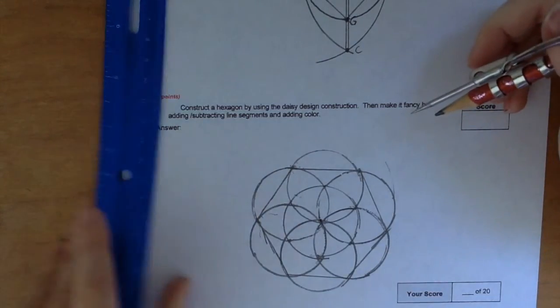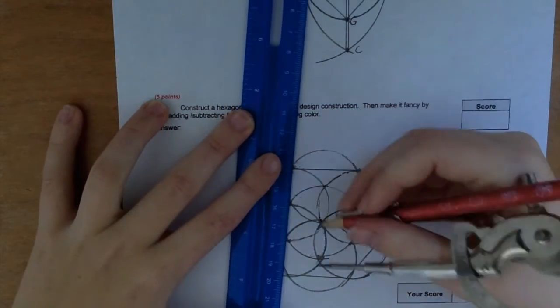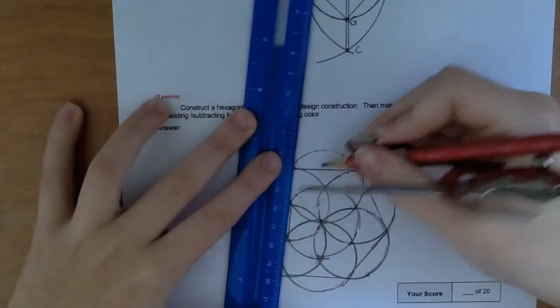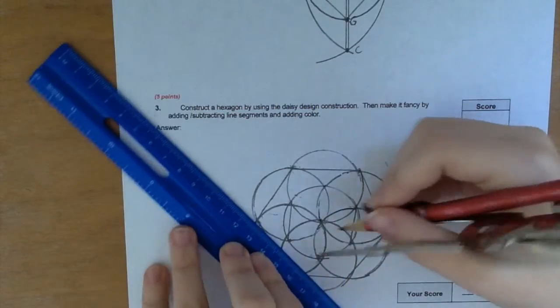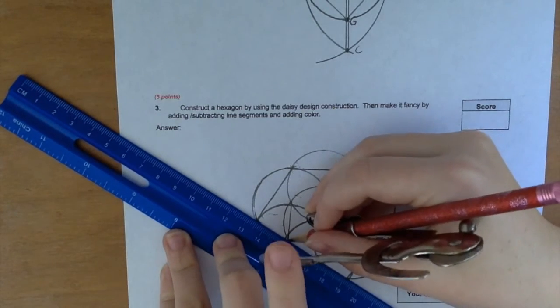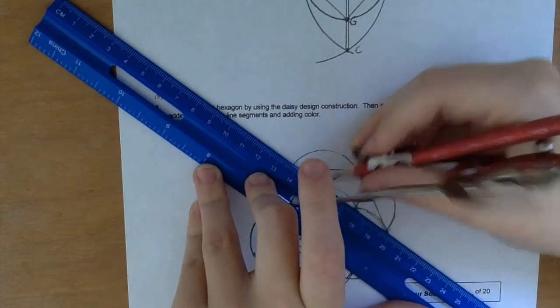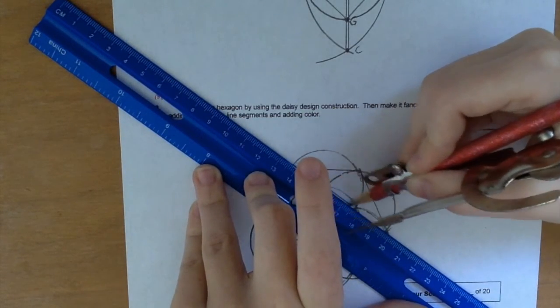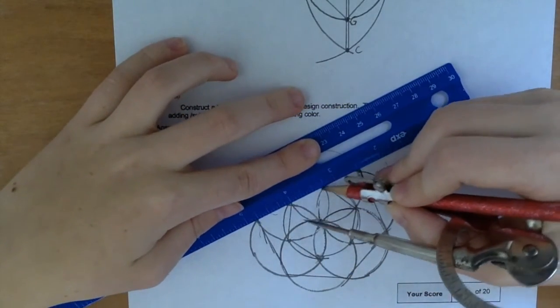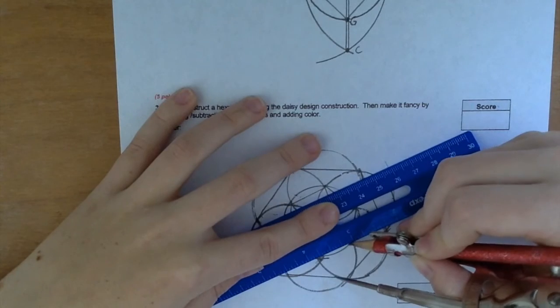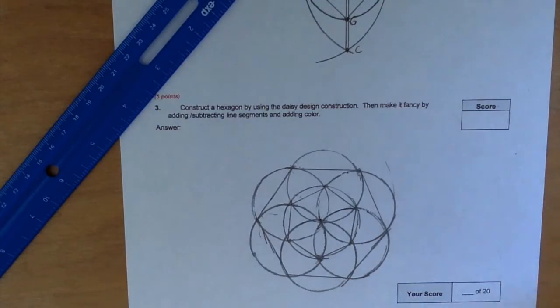You can make a little one in the middle too if you find this little part and this little part, and right here and here and here, and then there. And that's another little hexagon on the inside too.